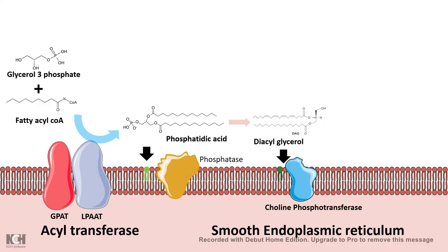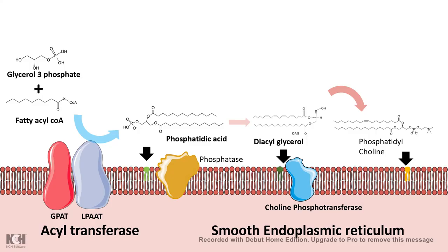Diacylglycerol is eventually combined with polar head groups. In this example, choline phosphotransferase adds a polar head group to form phosphatidylcholine. The choline part is the polar head of the phospholipid, while the fatty acid chains are hydrophobic and are deeply embedded, interacting with each other through hydrophobic forces.